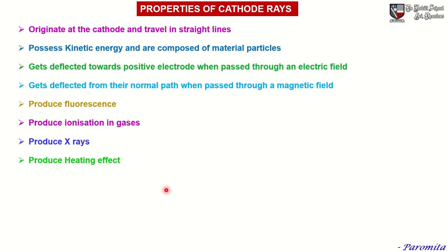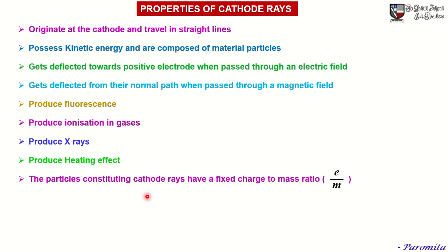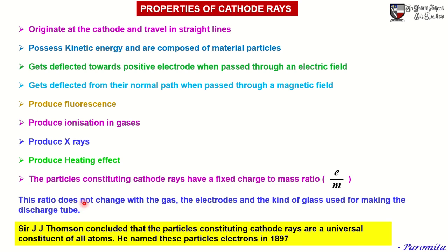Cathode rays produce a heating effect — when cathode rays are made to fall on a thin metal foil, they heat it. The particles constituting the cathode rays have a fixed charge-to-mass ratio, meaning cathode rays have a fixed E/M ratio. This ratio does not change with the gas, the electrodes, or the kind of glass used for making the discharge tube — the E/M ratio of cathode rays is constant.